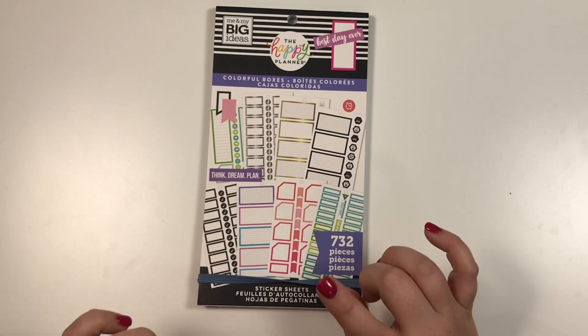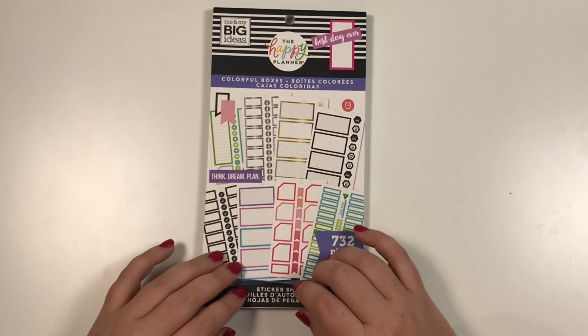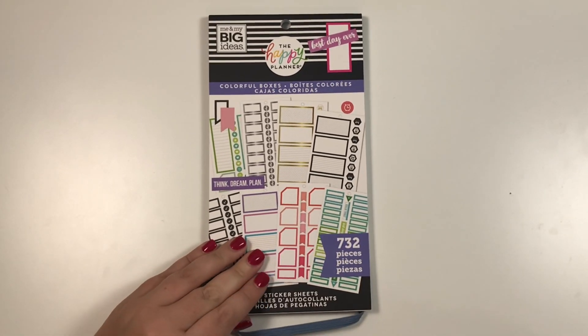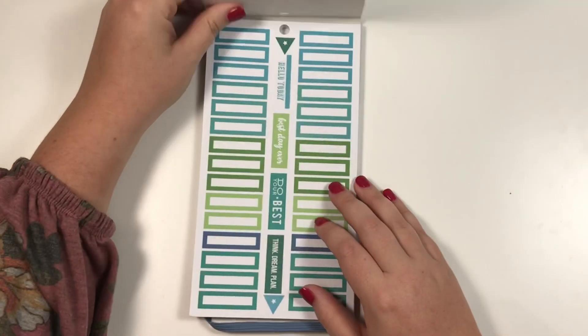This book is going to be exclusive to Joann and the Happy Planner site. It will be on the Happy Planner site on September 20th. I picked mine up at a local Joann, so they are starting to roll out to stores now.